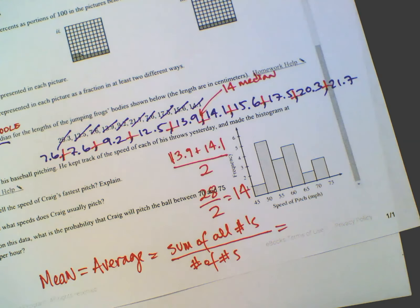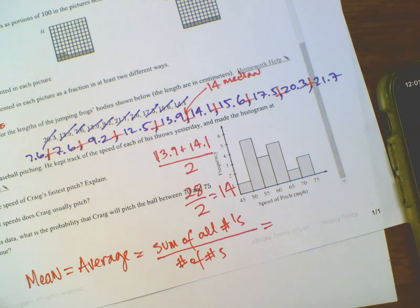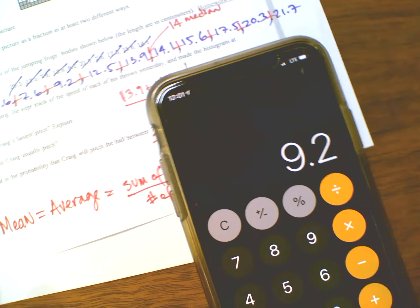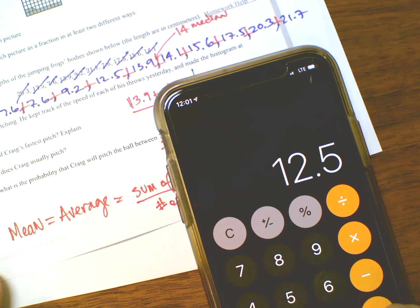So I'd take out a, and I could use in this case, a calculator just to make things quicker for myself. But I would hope you could add those without a calculator, but I'll go ahead and let you do that this time. So 7.6 plus 7.6 plus 9.2. Let me do this so you can see what I'm doing. 9.2 plus 12.5 plus 13.9 plus 14.1 plus 15.6 plus 17.5 plus 20.3 plus 21.7. And I get 140.